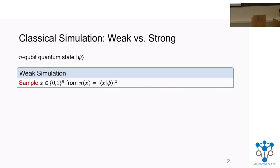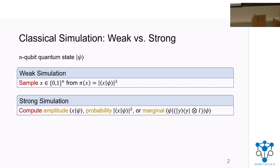This talk is about classical simulation. In classical simulation, we consider an n-qubit quantum state |ψ⟩. In weak simulation, the task is to simulate sampling from the output distribution induced by measuring the state ψ in the computational basis. A closely related notion is strong simulation, which asks for computing the amplitudes, probabilities, or marginals associated with the state ψ.